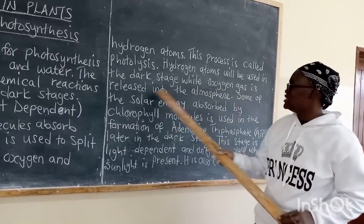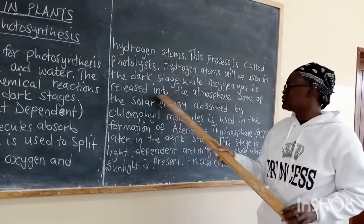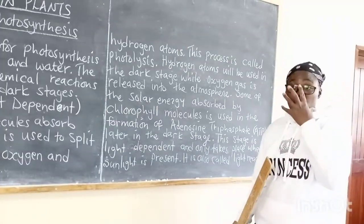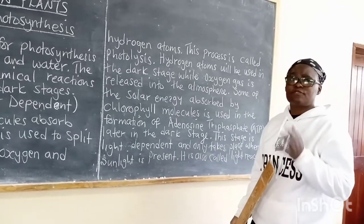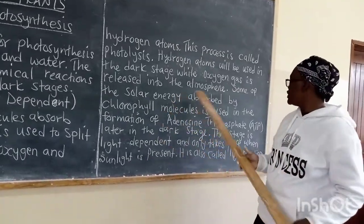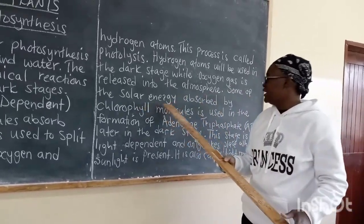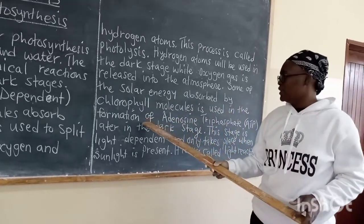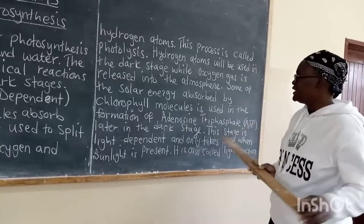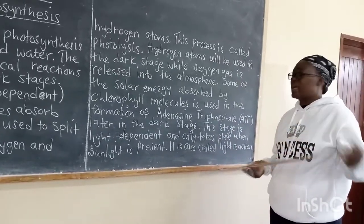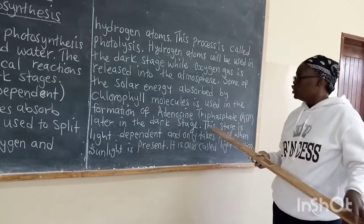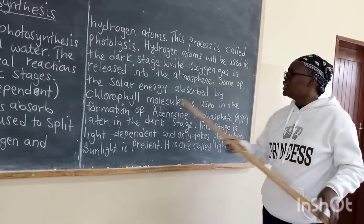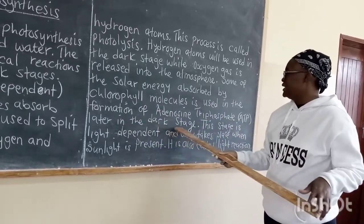The hydrogen atoms produced will be used later on in the next stage, which is called the dark stage. The oxygen gas is released into the atmosphere — the same oxygen that human beings will use to breathe, or that plants can use for respiration. Some of the solar energy trapped by chlorophyll molecules is used in the formation of adenosine triphosphate, or ATP — this is the stored energy that will also be used later in the dark stage.